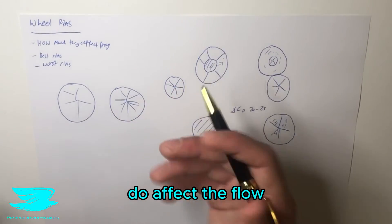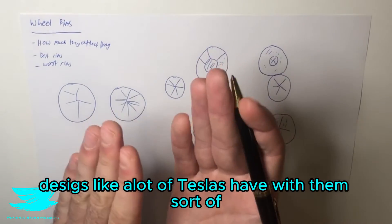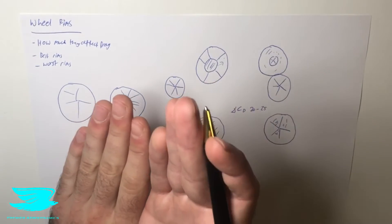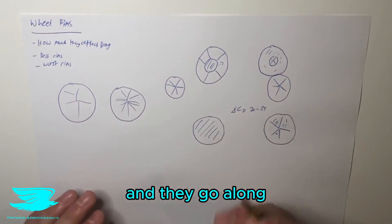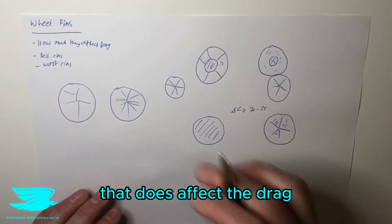So the number of spokes don't really affect the flow. The design of the spokes does affect the flow. So if you have a fan blade design, like a lot of Teslas have, where they sort of pivot out and go along, and it's sort of like a fan or a turbine, that does affect the drag.